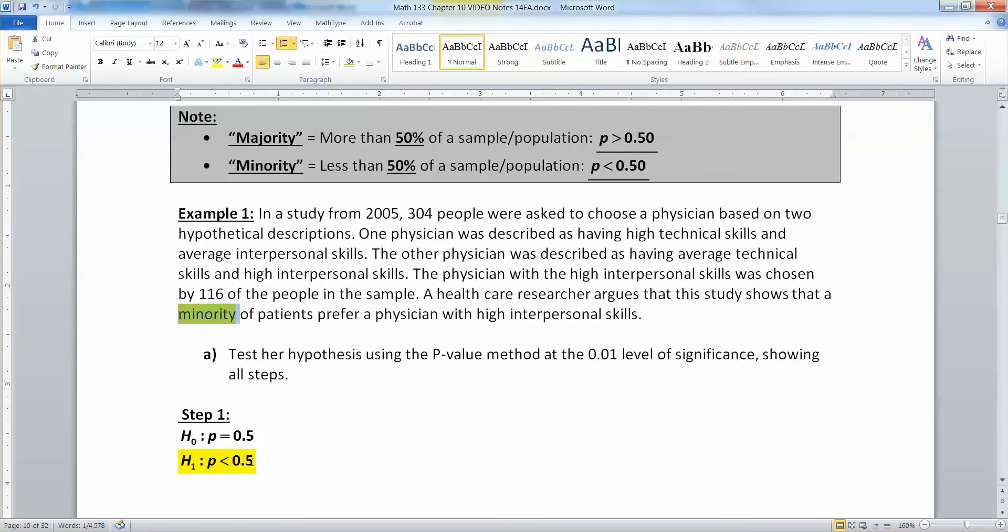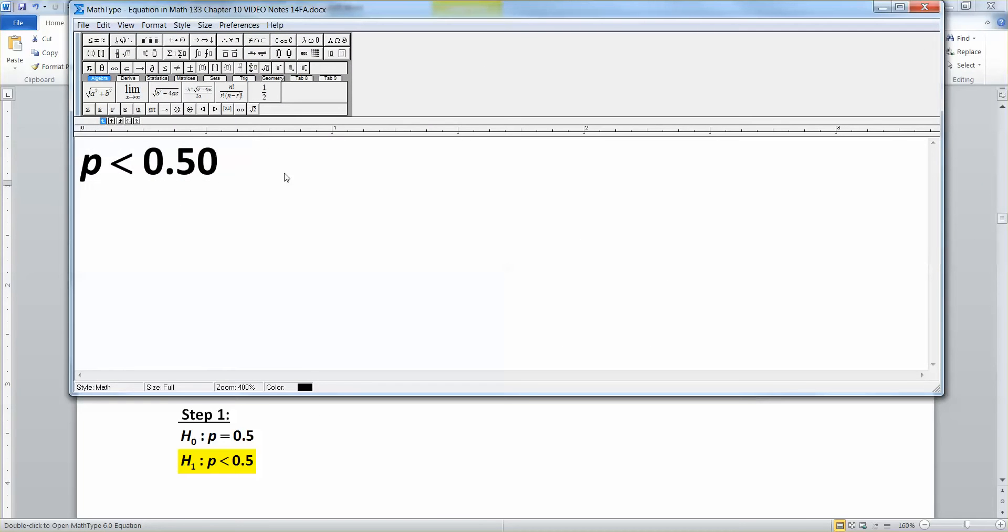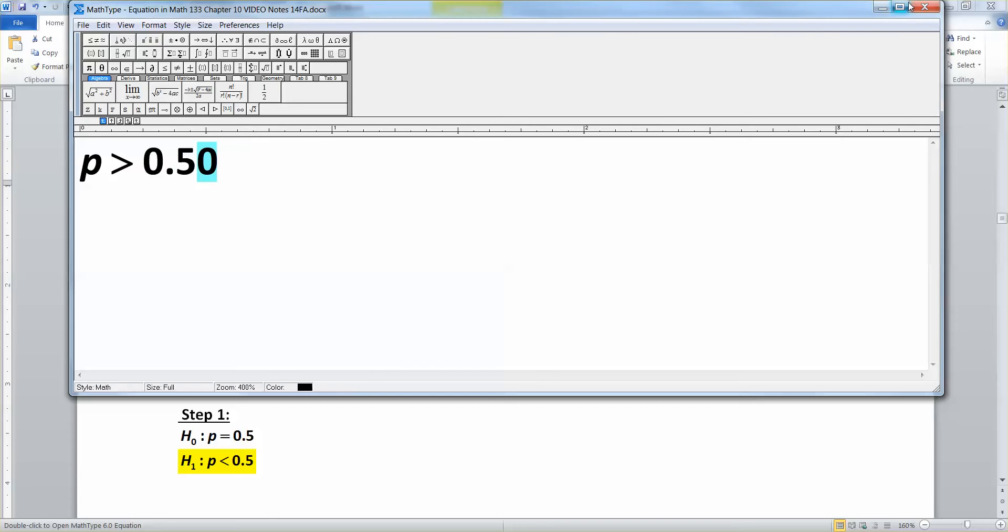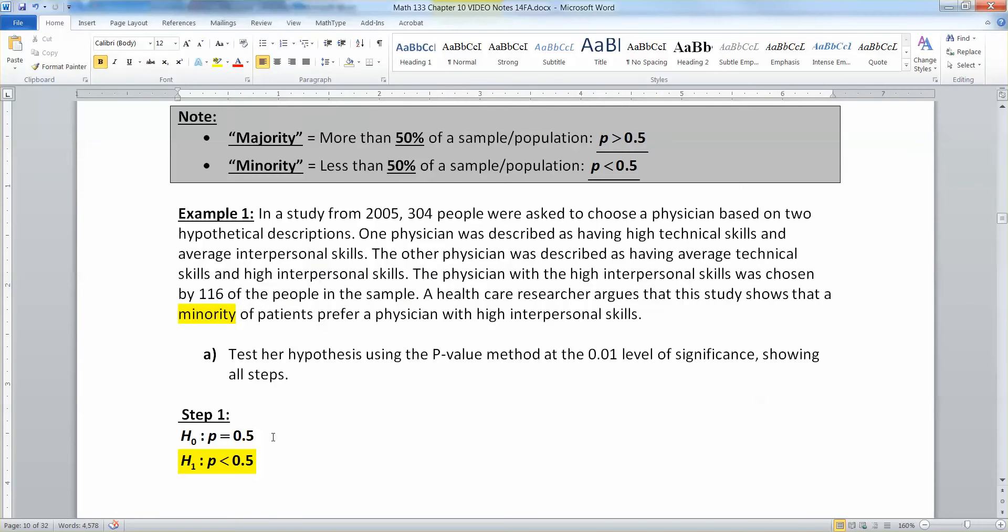In fact, you'd actually probably figure out the less than first in this problem, and then go back and figure out the null. Because once you know minority, you know that's less than 50% and less than 0.5. And therefore, which I suppose I could actually change this to 0.5. Right? 50%, 0.5. Alright, once you know that one's less than 0.5, then you know that the null hypothesis has to have the same numbers, but an equal sign instead. Alright, step one is done.